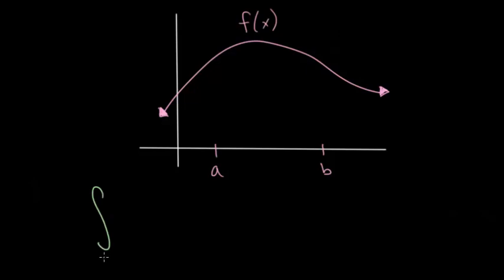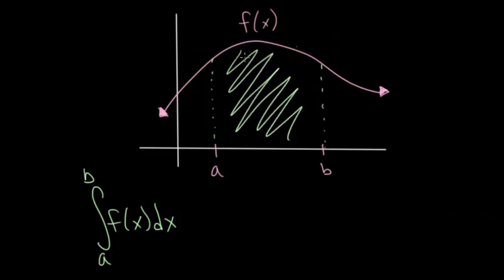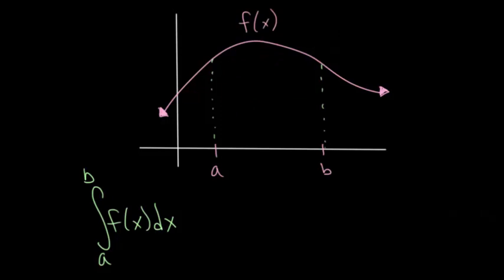So the definite integral from a to b of f(x) dx, graphically at least, just tells us that if we restrict the region underneath this curve from an x value of a to an x value of b, then this definite integral will compute for us the area of this region here. And the definition of this definite integral is essentially a Riemann sum.